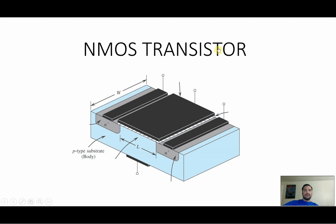I'm going to explain how the NMOS transistor works. This is a 3D view of the NMOS transistor. We have a width and we have a length. As an electrical engineer, what you want to do is play with the width. You can get different currents, or depending on your circuit, you might want to change the width.